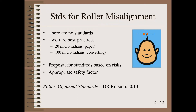Unfortunately, there are no standards for roller alignment. In fact, the only guidance we get are some rare best practices in the paper and converting industry. These rare best practices are on the order of a hair's thickness tolerance — about five thousandths of an inch, or 125 microns.